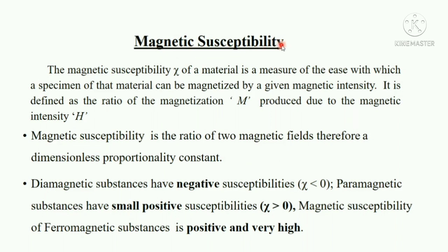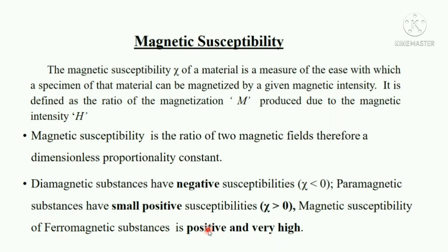Now let us see what magnetic susceptibility is. When a magnetic material is kept in a magnetic field, it gets magnetized. Magnetic susceptibility is a measure of the ease with which a specimen can be magnetized by a given magnetic intensity. It is defined as the ratio of the magnetization M produced to the magnetic intensity H. Since it is a ratio of two magnetic fields, it is a dimensionless proportionality constant. Diamagnetic substances have negative susceptibilities, paramagnetic substances have small positive susceptibility, and ferromagnetic substances have positive and very high susceptibility of the order of 10,000.